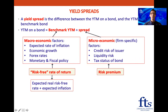So a yield spread — all this is, is a difference between the yield to maturity on a bond, let's say it's a corporate bond, so we'll put a C over there, and the yield to maturity on a benchmark bond, which is normally a government bond, so we'll put in a G over there. To get the yield to maturity on the corporate bond, all we need to do is take the yield to maturity on the benchmark government bond and then add a spread.